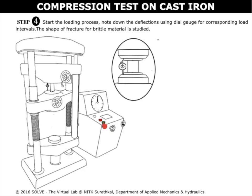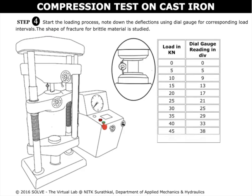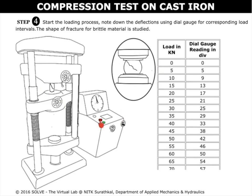Now switch on the machine by clicking on the green button. The loading process is started. Note down the deflection using the dial gauge for corresponding load intervals. The shape of fracture for the brittle material is studied. Now switch off the machine by clicking on the red button.